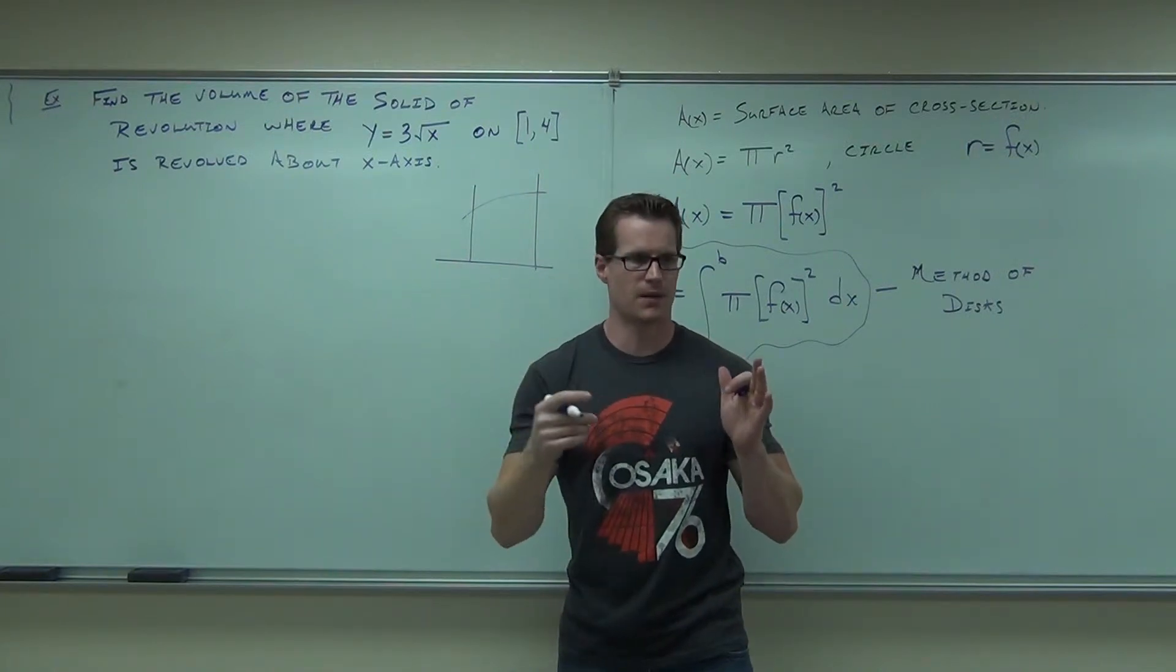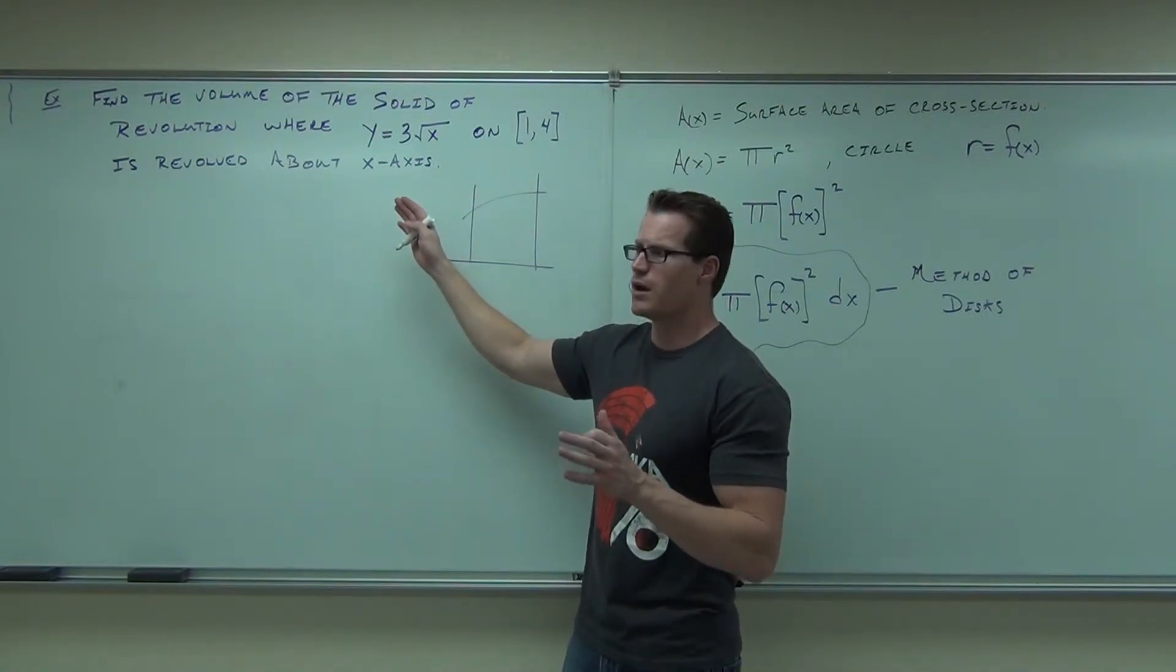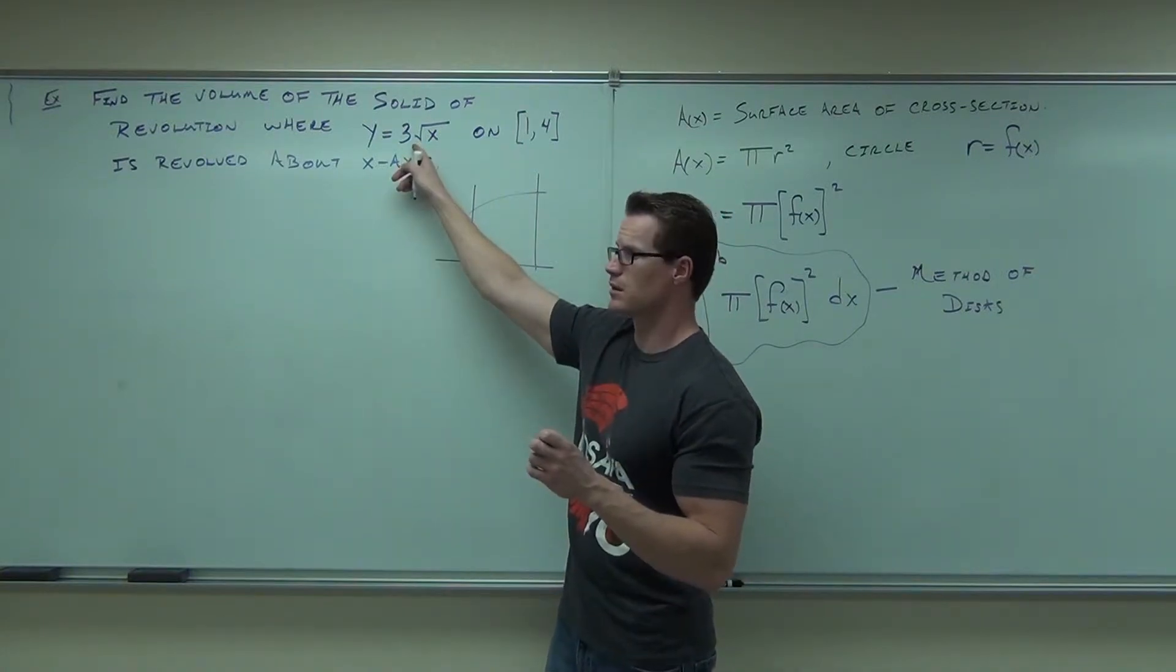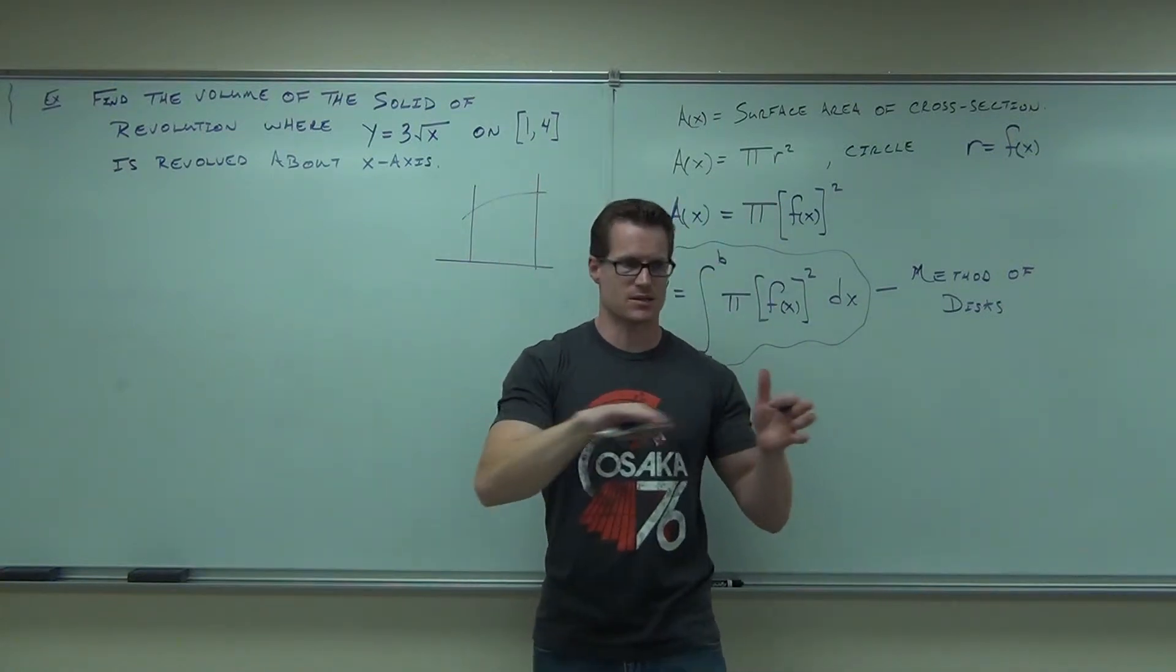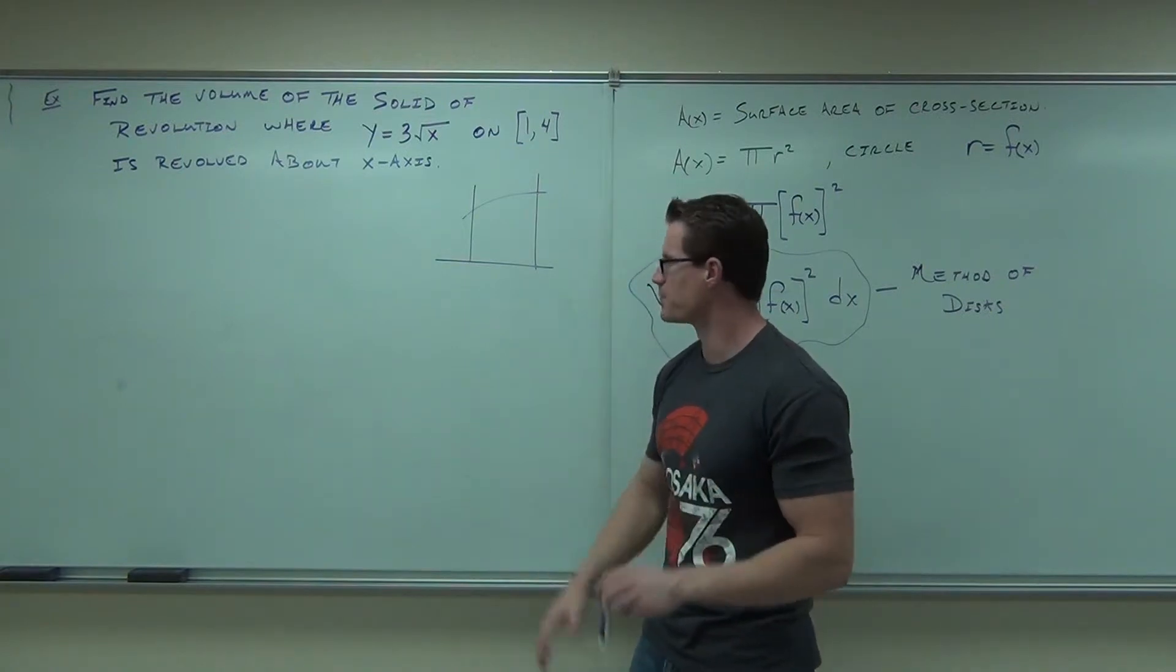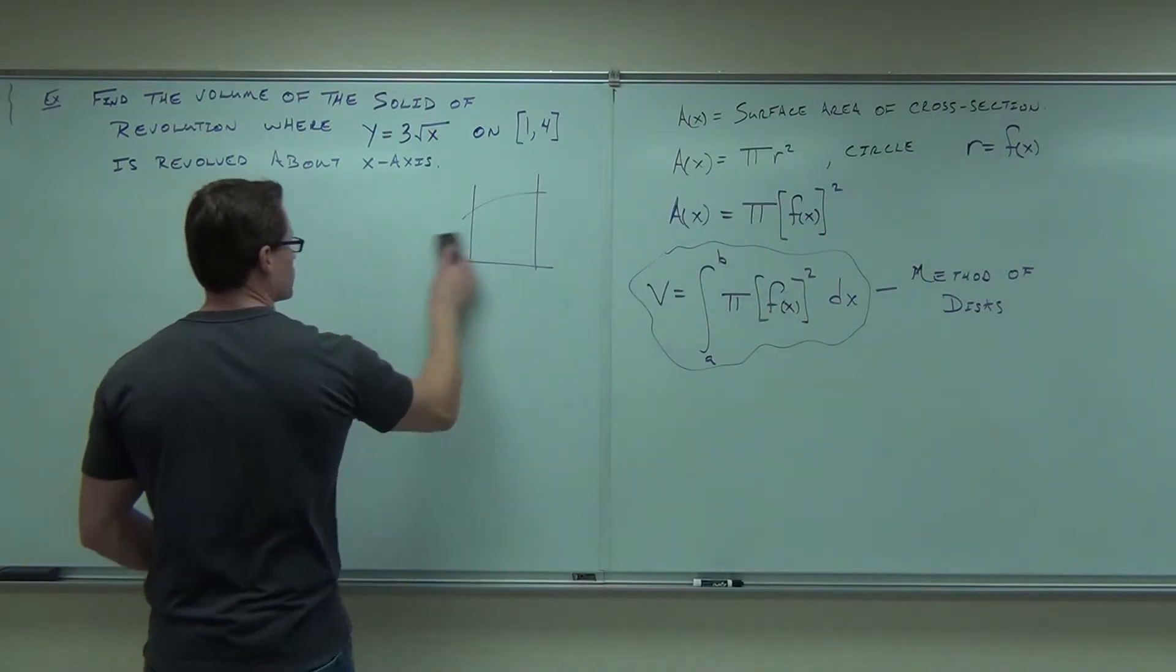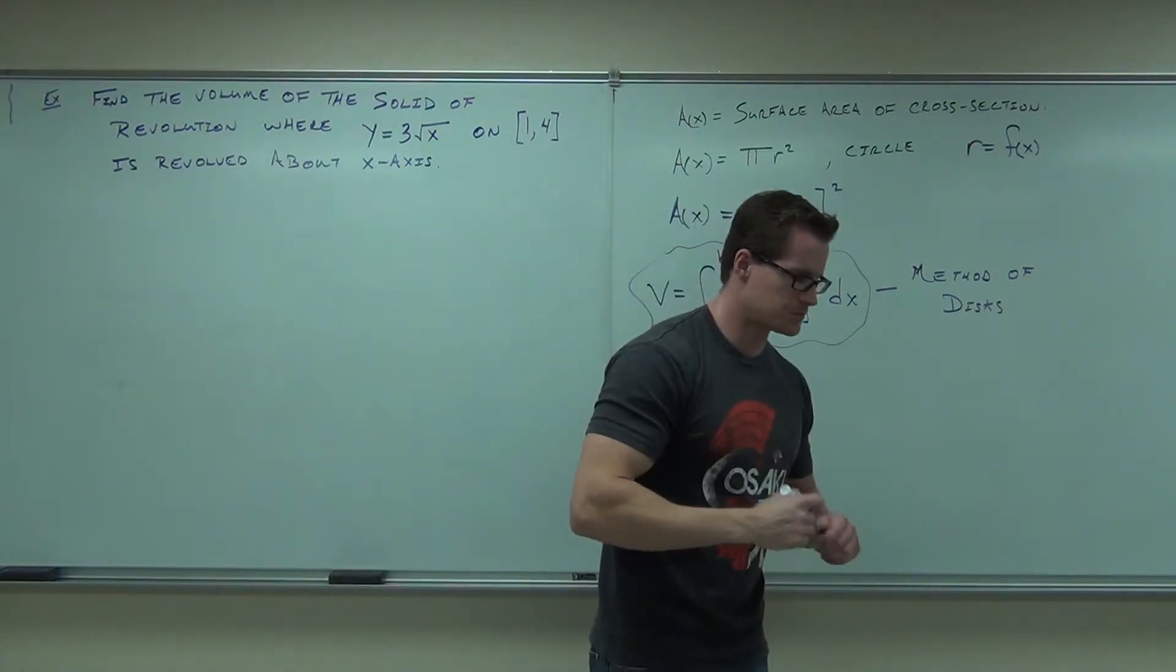It says take it between this function, whatever this function happens to look like. About the x = 1, x = 4, and the x-axis. That comes up with the same exact area that you're going to be sweeping out. Do you see the point? So it can be worded differently. Don't let the wording jack you up. It's going to give you bounds, it's going to give you a function, and we're revolving that. So that's the picture we're going to have. We're going to take this thing and spin it around.